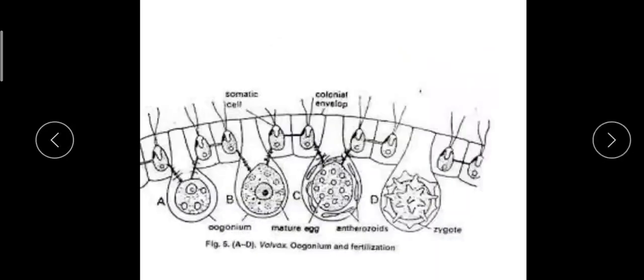Now, coming to the development of oospores. For the formation of the female gamete, a gonidial cell is formed and pushed to the inside of the colony. It then receives plenty of reserved food material from the neighboring somatic cells through cytoplasmic connections, and it enlarges in size.